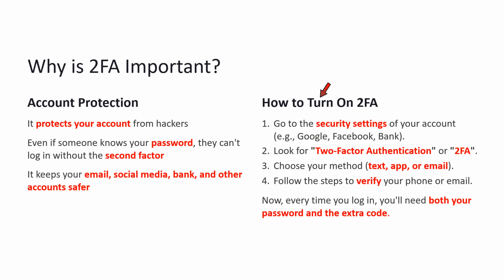How to turn on two-factor authentication: go to the security settings of your account — for example, Google, Facebook, or your bank. Look for two-factor authentication or 2FA. Then choose your method: text, app, or email. Follow the steps to verify your phone or email. Now every time you login, you will need both your password and the extra code.